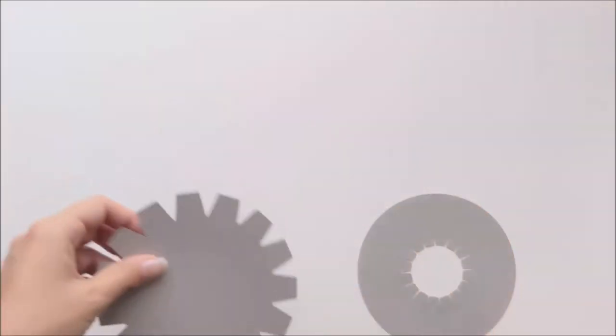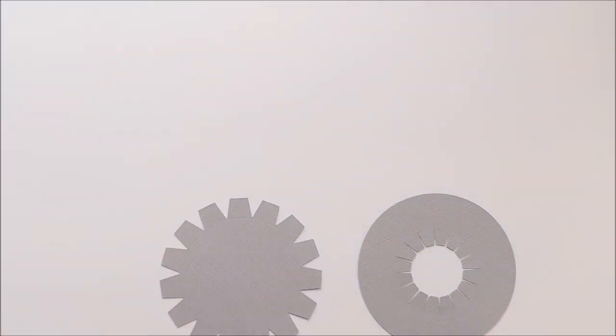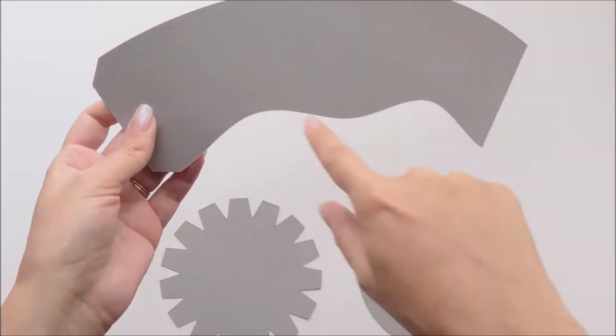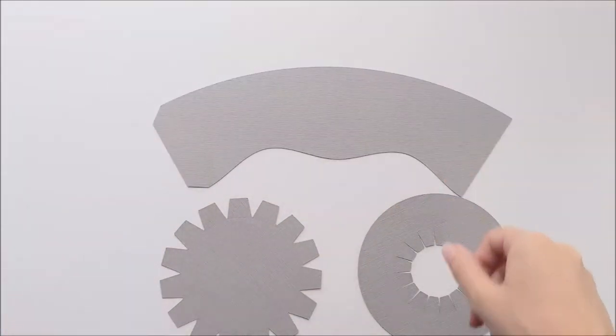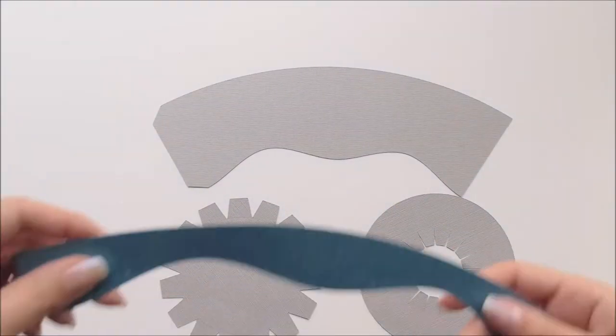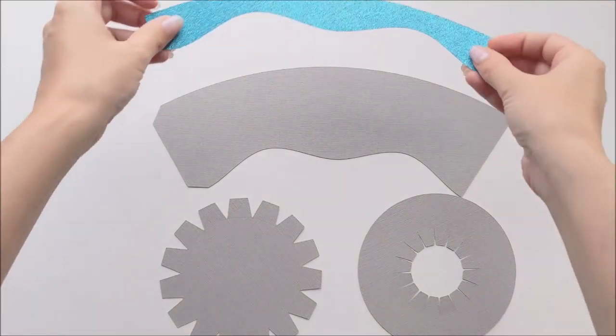You're going to start by cutting out all of your pieces. There's a ring piece that makes the brim. There's a circle piece with tabs that's going to be the top of the hat. This curved piece with the wave on the bottom is the crown, and this piece which is similar to the crown is the hat band.